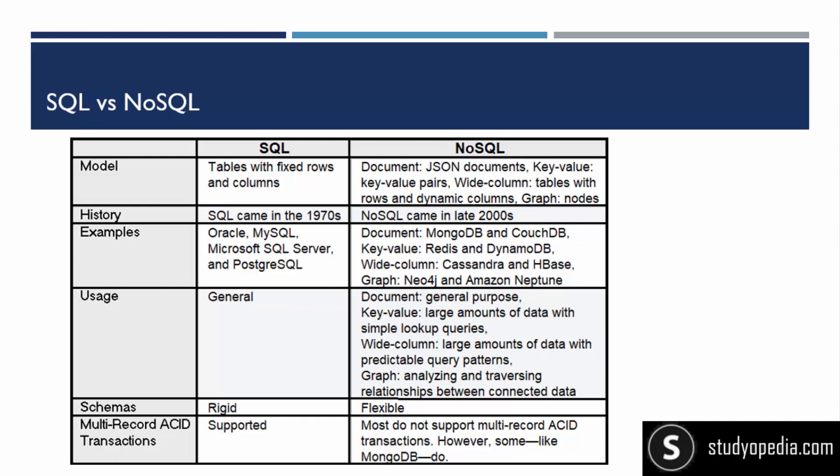For NoSQL, the biggest and one of the most trending databases right now is MongoDB, which is document-based. We can also store data in the form of key values using Redis, wide column using Cassandra and HBase. SQL is generally used to store data in the form of tables, rows, and columns.